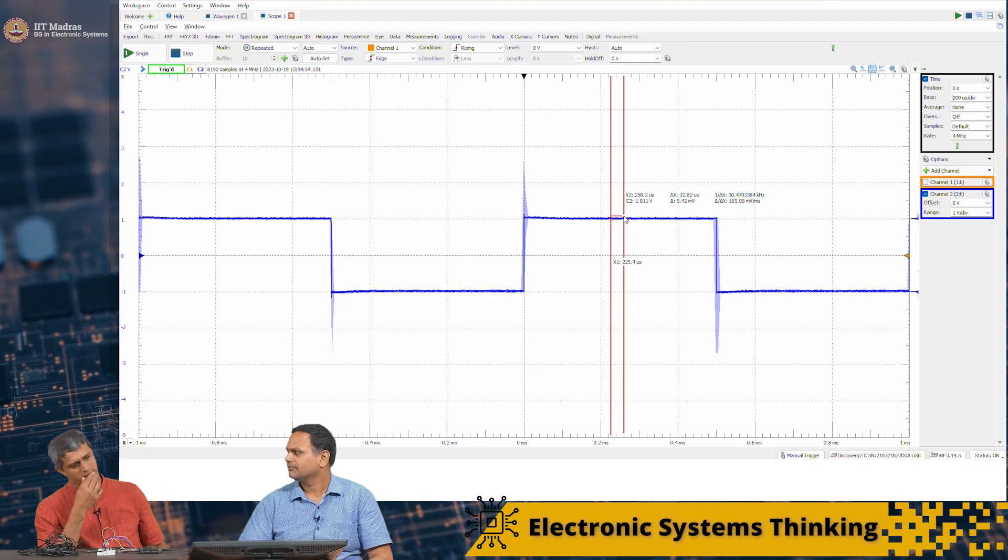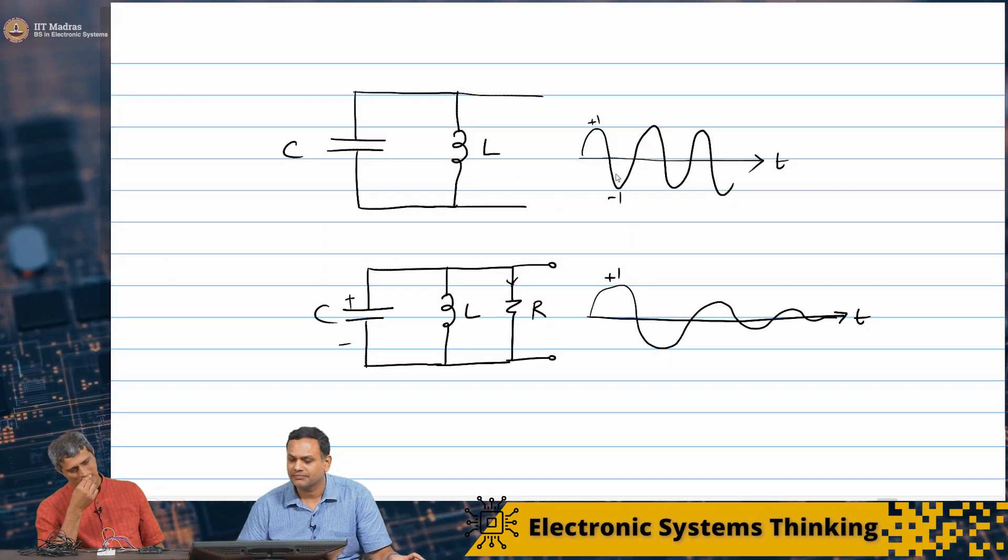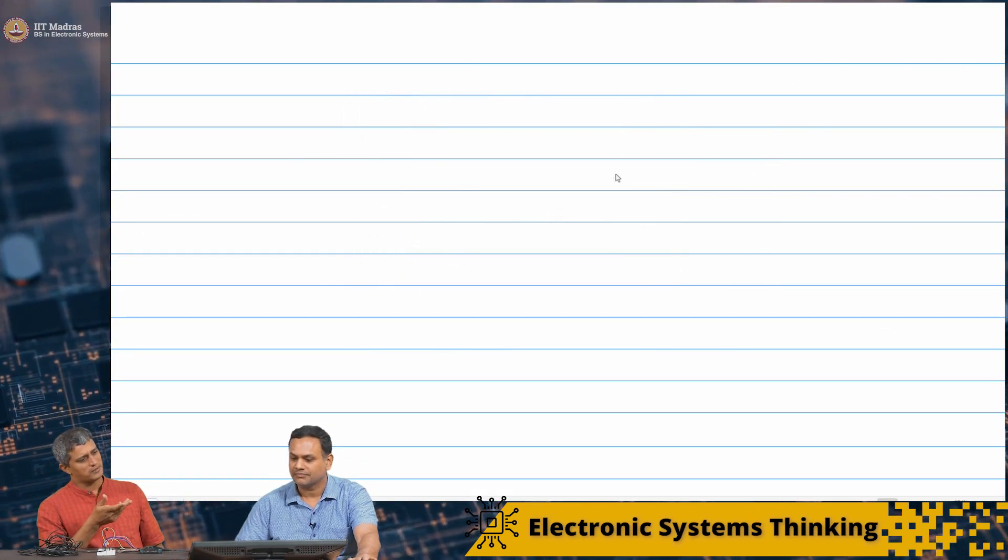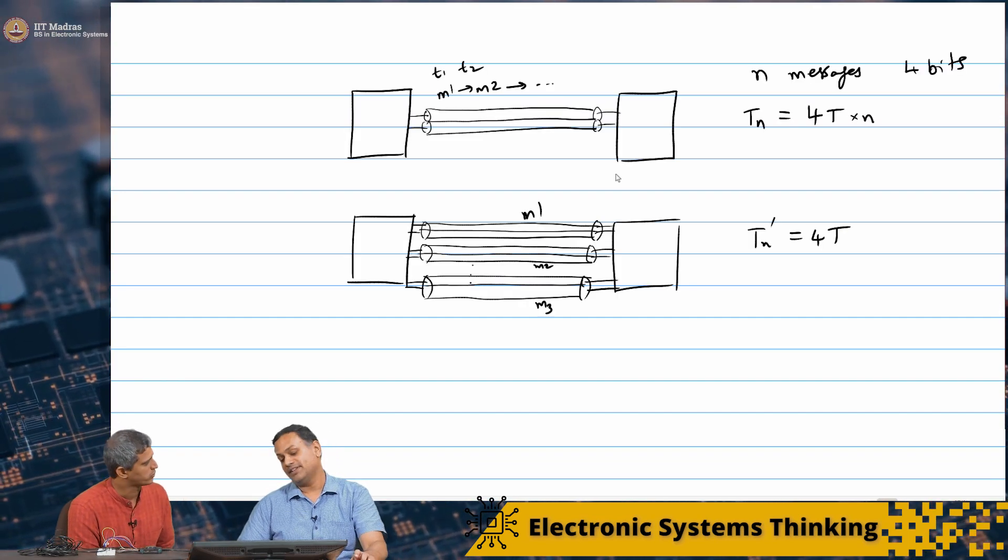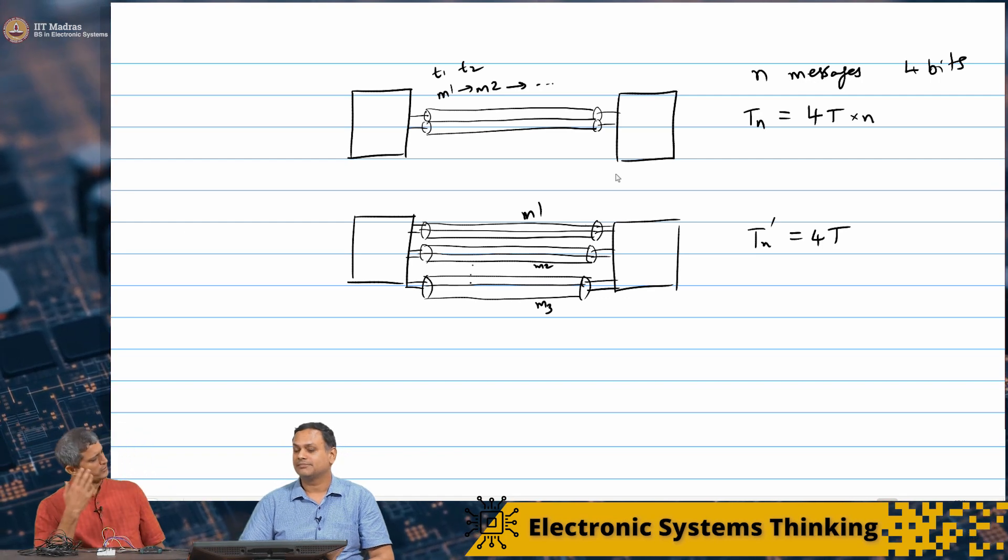So next my question is, see this parallel - I cannot have thousands of wires because if I have thousands of users or thousands of messages. What is the other way?